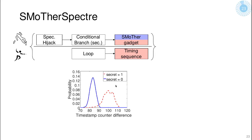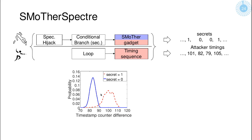The attacker, meanwhile, is in a loop gathering timing information. As discussed, the timing leads to two nicely disjoined probability distributions for how long the timing sequence takes to execute — say, if the secret is one it takes longer than if the secret is zero. The information from the distribution is used to determine a timing threshold from which we can finally extract the value of the secret. For instance, if we get a timing of 101 clock cycles we can assume the secret was one; if we get 82 cycles, we assume the secret was zero. That is how we extract secrets from the victim.